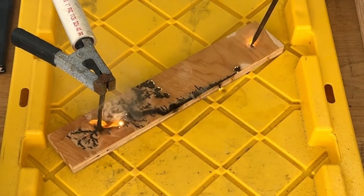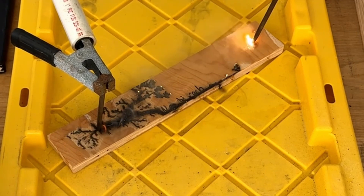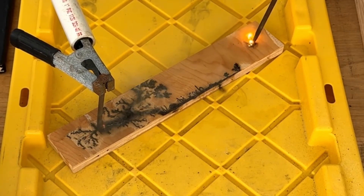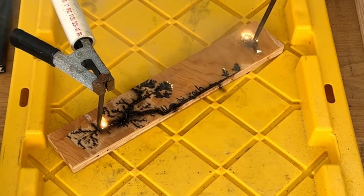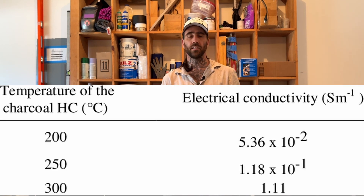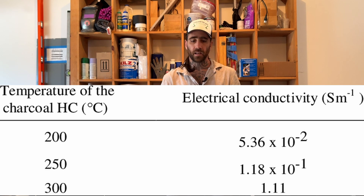What's happening when the current is applied to the wood with the electrolyte on it is the current is going through all those different paths, getting really hot, and burning the wood. As it burns the wood, the wood turns into charcoal, and that charcoal is now conductive — so now the wood is conductive. It's kind of like a feedback loop.